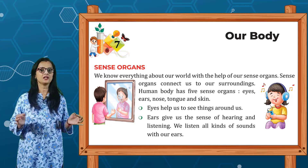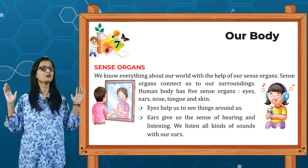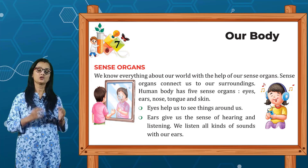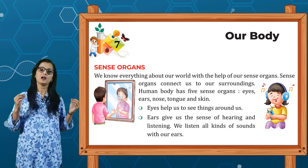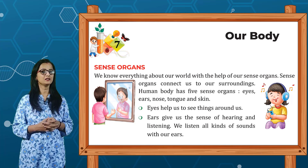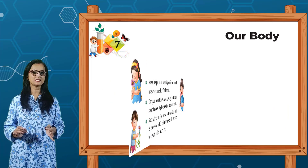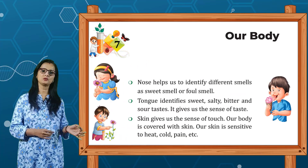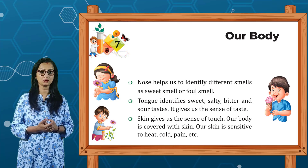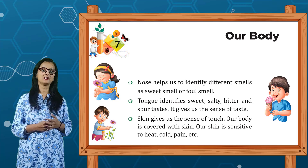Eyes help us to see things around us. Ears give us the sense of hearing and listening — we can listen to all kinds of sounds with our ears. Nose helps us to identify different smells, such as sweet smells or foul smells.